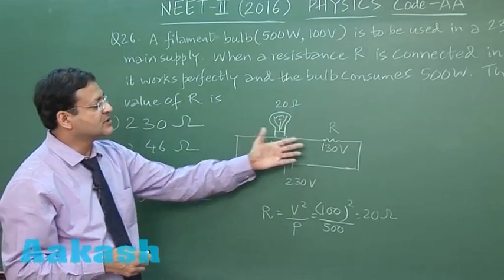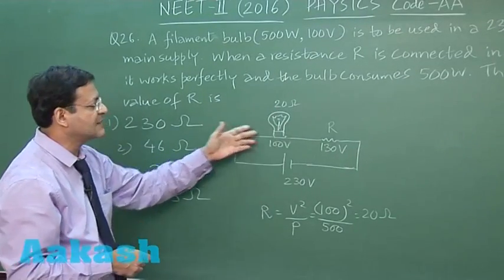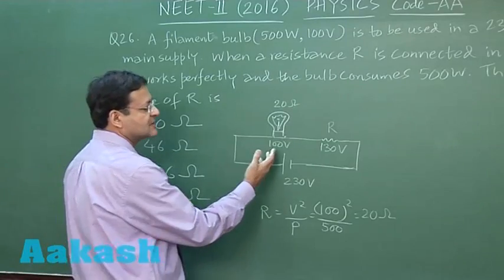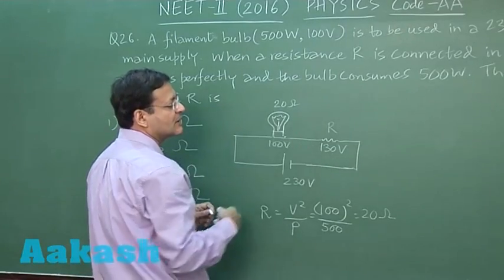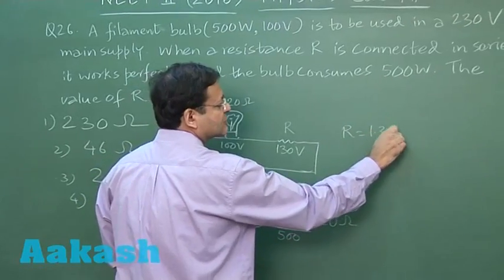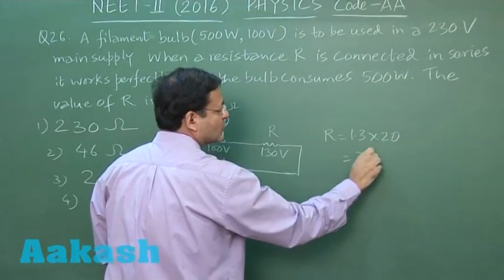You understand the entire picture. Now you see potential drop is in direct ratio of the resistance because the same current is flowing through that. So if it is 1.3 times, this will also become 1.3 times. So resistance is 1.3 times 20, that makes it 26 ohm.